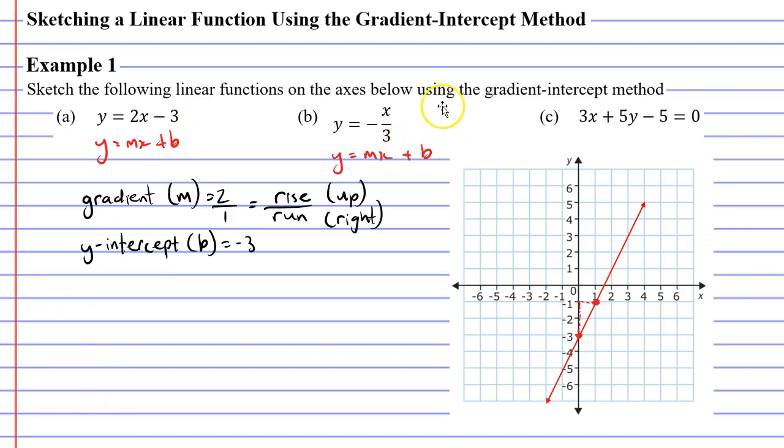Now you might notice that there doesn't seem to be any number here for b. And that means that we're technically adding zero. So our y intercept is zero. I'll have to show my working out for question b below question a. So we'll write down that our y intercept or b equals zero this time.